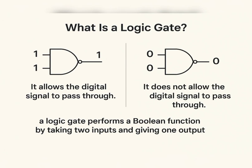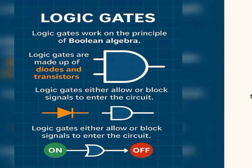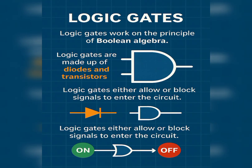Therefore, we define logic gates as digital devices which perform Boolean functions by taking inputs and giving one output. Key things to remember: logic gates work on the principle of Boolean algebra; logic gates are made up of diodes and transistors; and with the help of Boolean algebra, logic gates either allow or block signals in order to enter into a circuit.